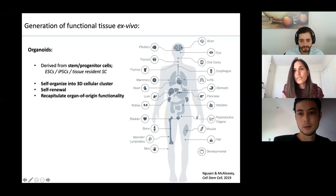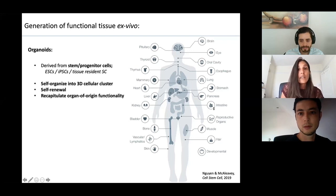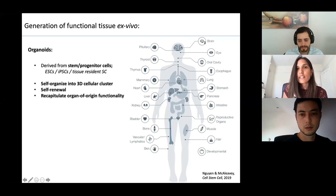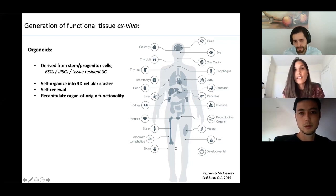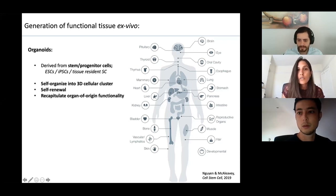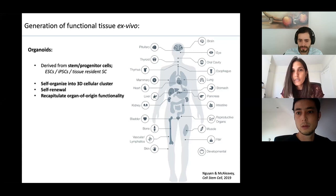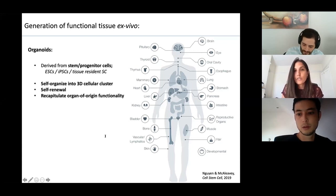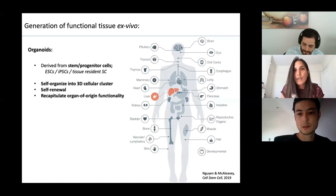The first organoid system was described back in 2009 for the intestine. A lot of progress has been made in the last ten or so years, and there are now organoid systems described for many different tissues throughout the body. Today we'll be focused on the liver.